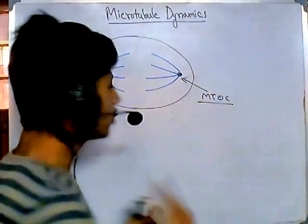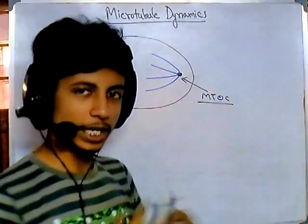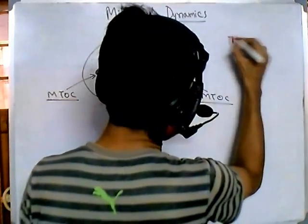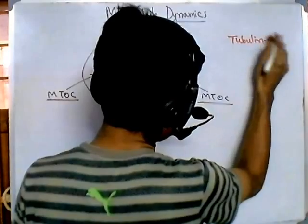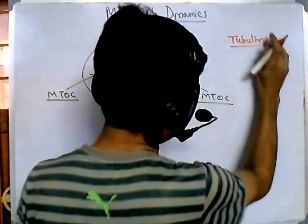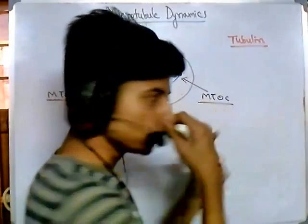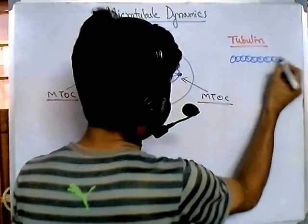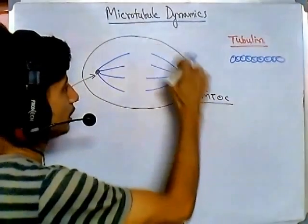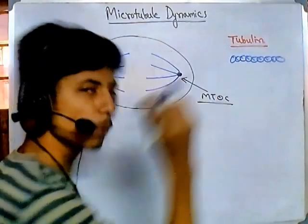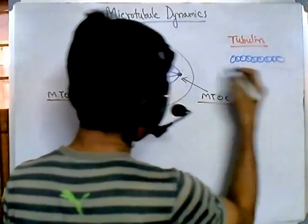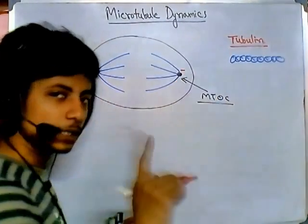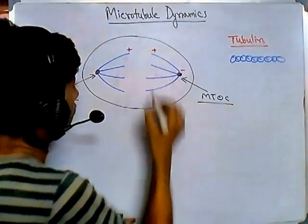Microtubules are made of a chain of proteins called tubulin. Tubulin proteins are present in eukaryotic systems and are the basic unit of microtubules. These small tubulin proteins are arranged one after another to produce a chain, which is ultimately what we see as the microtubule. The tubulin proteins have two different ends: one is the negative end facing towards the microtubule organizing center, and another is the positive end.